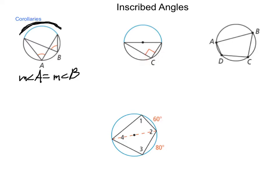That makes angle C a right angle. And the third corollary is that opposite angles of a quadrilateral inscribed in a circle are supplementary.